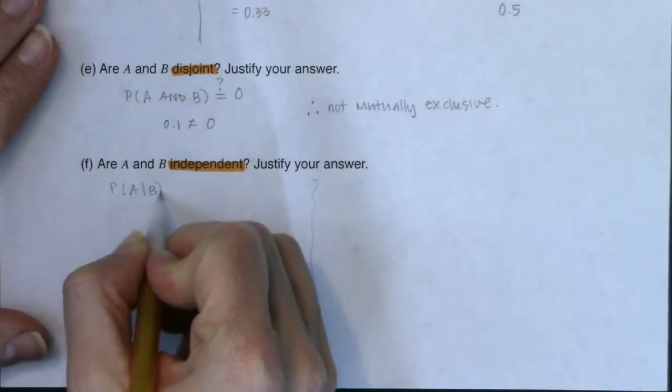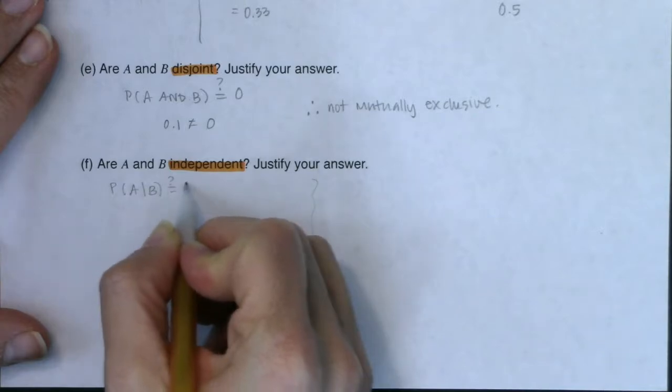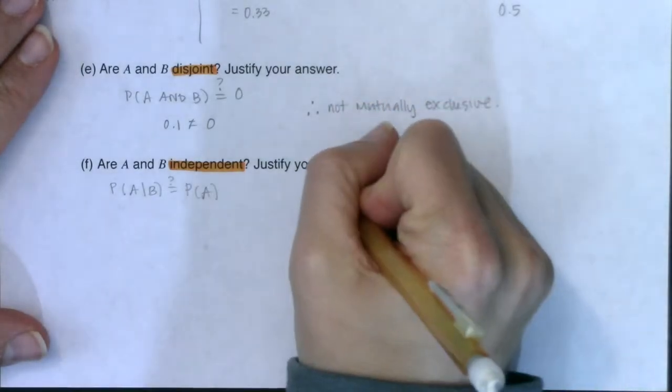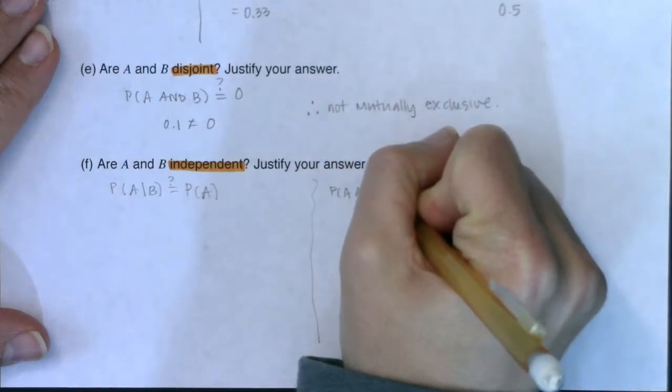Is the probability of A given B equal to the probability of A? So we could use formula three, or you could use formula four. They're both going to work in this case.